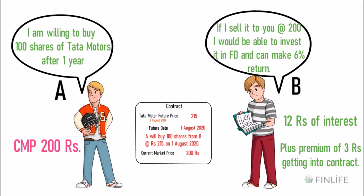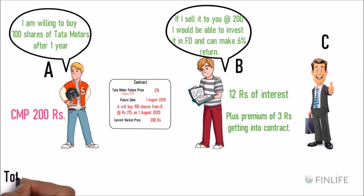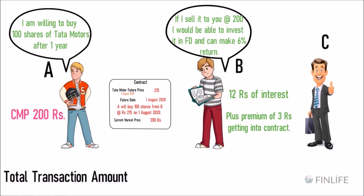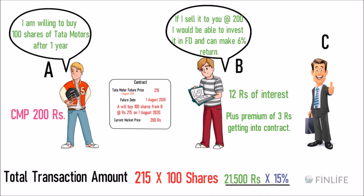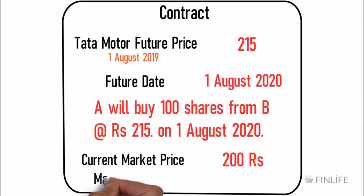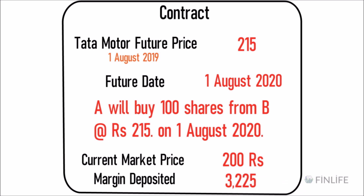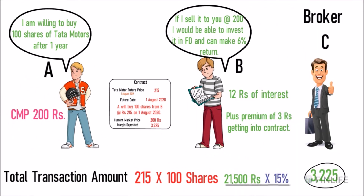Both parties are bound by the contract and must deposit a margin amount of 15% of the total transaction amount. The total transaction is 215 rupees times 100 shares, which equals 21,500 rupees. Both A and B each deposit 15% of 21,500 rupees with broker C, the custodian who ensures the deal is properly settled when 1 August 2020 arrives.